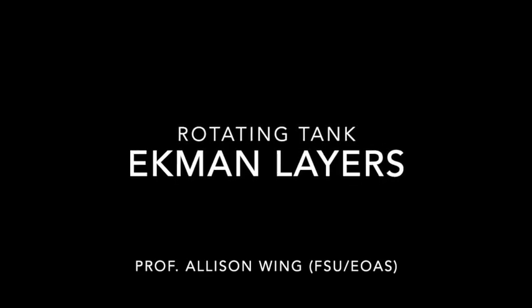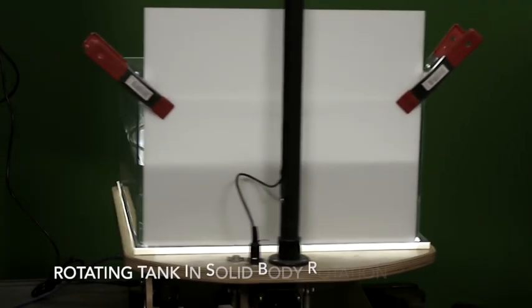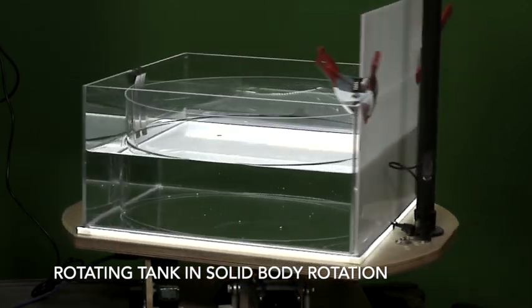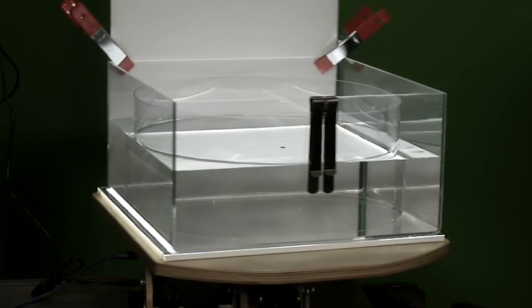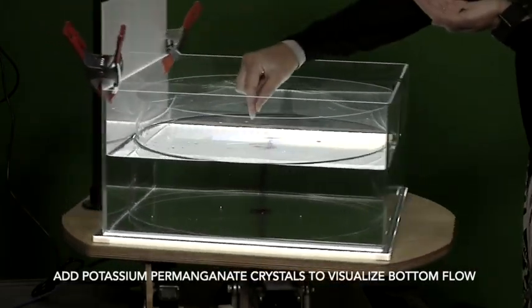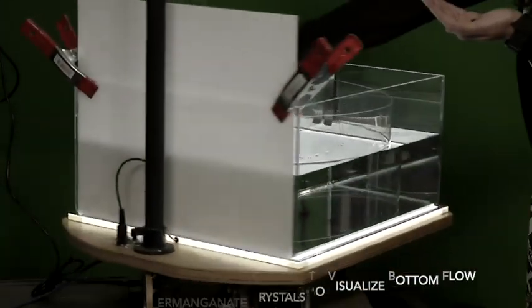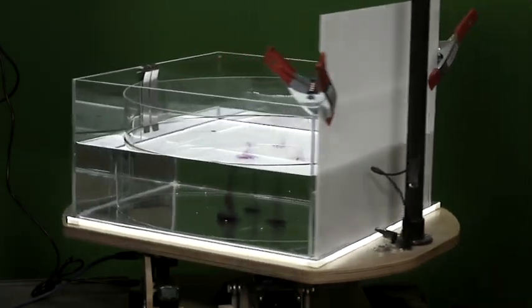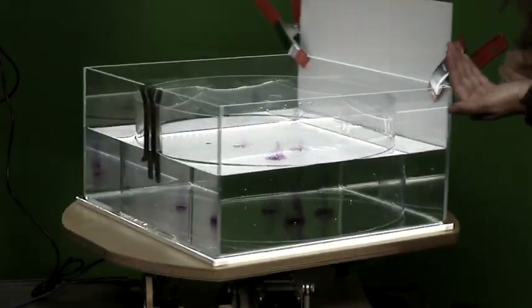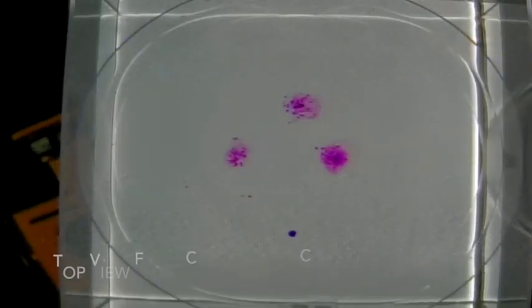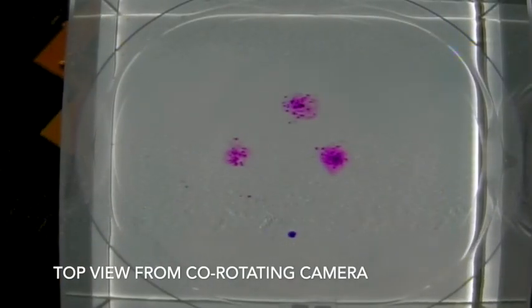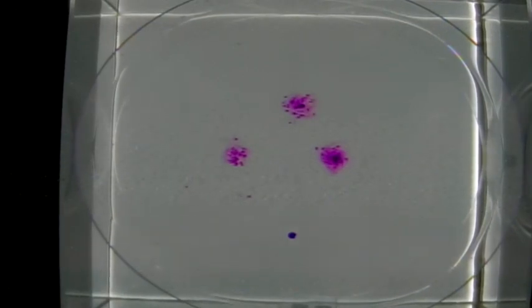This experiment with the rotating tank demonstrates flow in Ekman layers. We begin with our rotating tank in solid body rotation so the water is all spinning at the same speed, and we add some potassium permanganate crystals which sink to the bottom of the tank and allow us to visualize the flow at the bottom of the tank in that small surface layer that is influenced by friction from the tank's bottom.